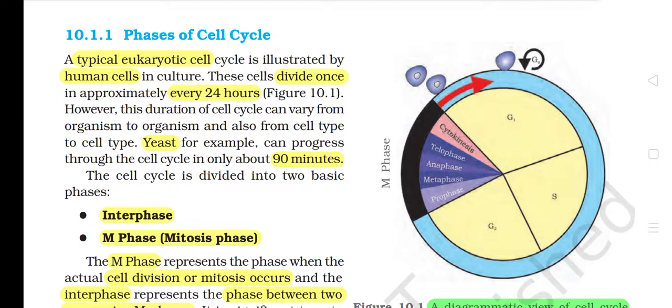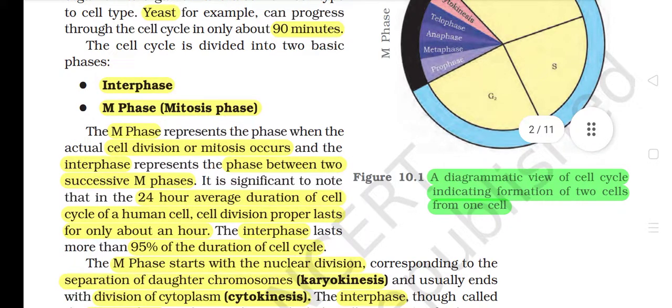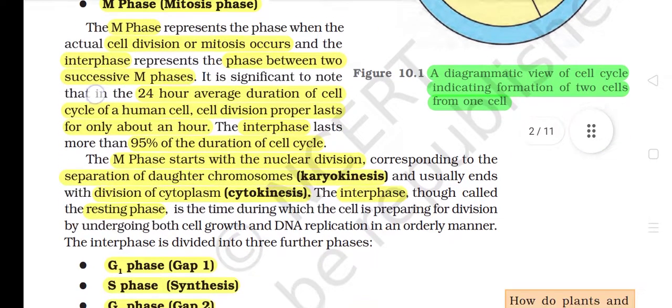The cell cycle is divided into two basic phases: Interphase and M phase (Mitotic phase). The M phase represents the phase when actual cell division or mitosis occurs, and the interphase represents the phase between two successive M phases. In the 24-hour average duration of the cell cycle of a human cell, cell division proper lasts for only about an hour. The interphase lasts more than 95% of the duration of the cell cycle.